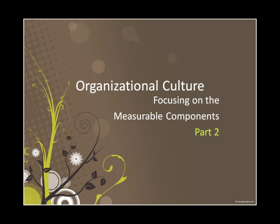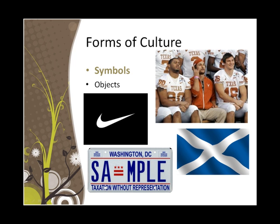Let's take a look at our first form: symbols themselves. There are a lot of different types of symbols. The first type are objects. Objects can be logos, they can be licenses, they can be flags, and they can be uniforms.